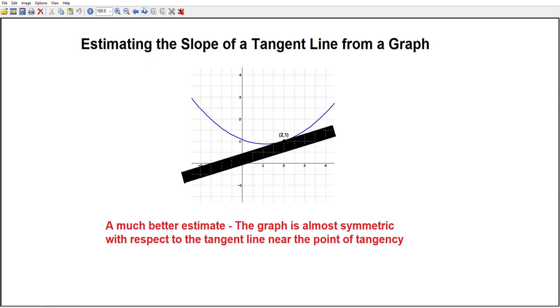It rises away from the point of tangency sort of equally on both sides with respect to the tangent line. And this sort of symmetry near the point of tangency suggests that we've got a pretty good estimate here.